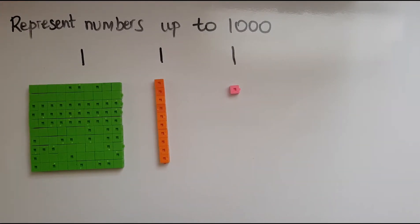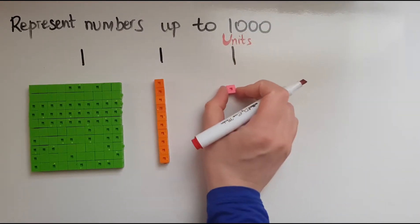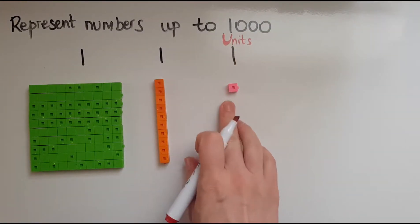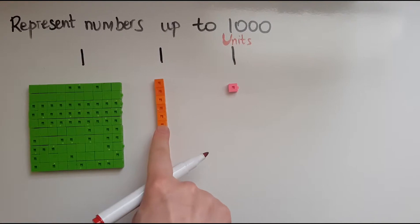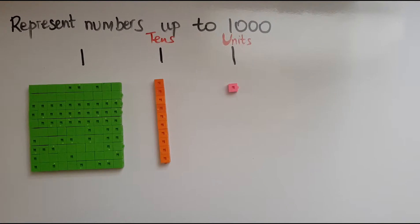So what we call these here are the units. Single ones: 1 cube, 2, 3, 4, 5, 6, 7, 8, 9. 10 would be coming here which we call tens. That's the tens column.